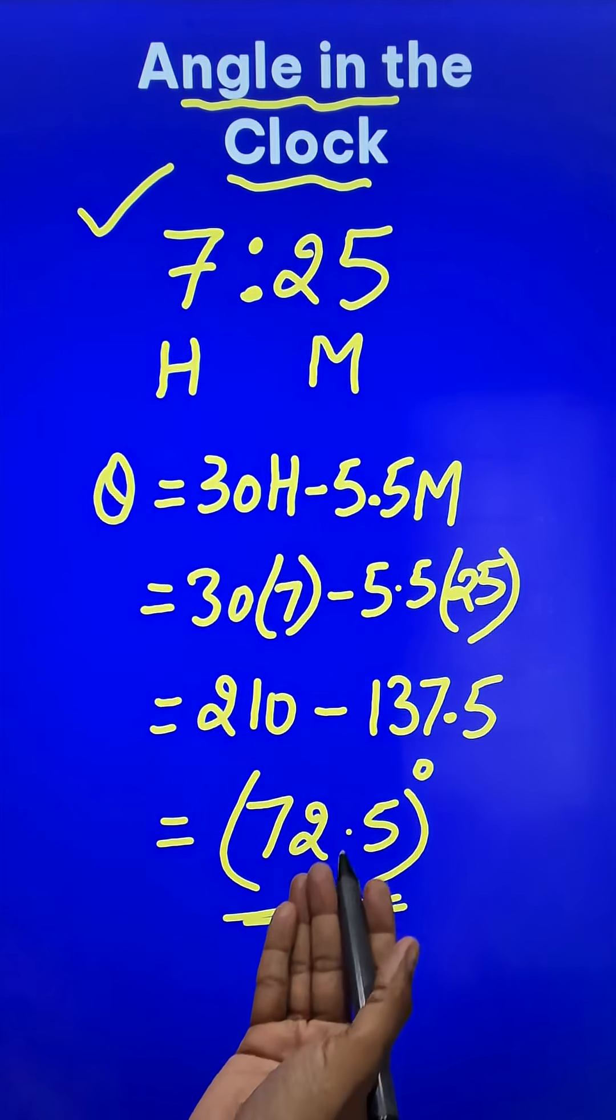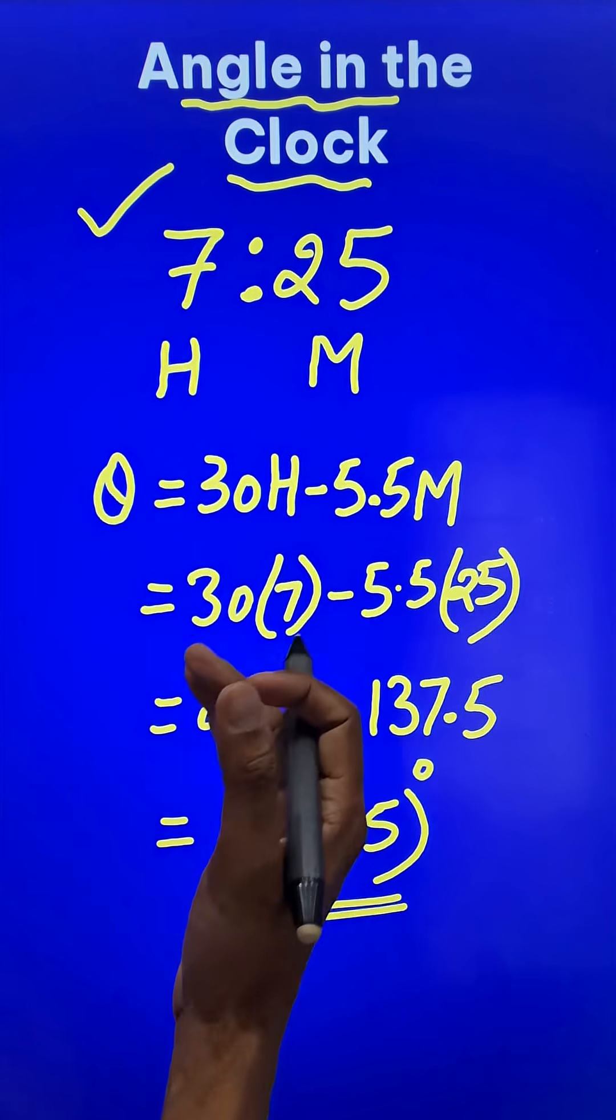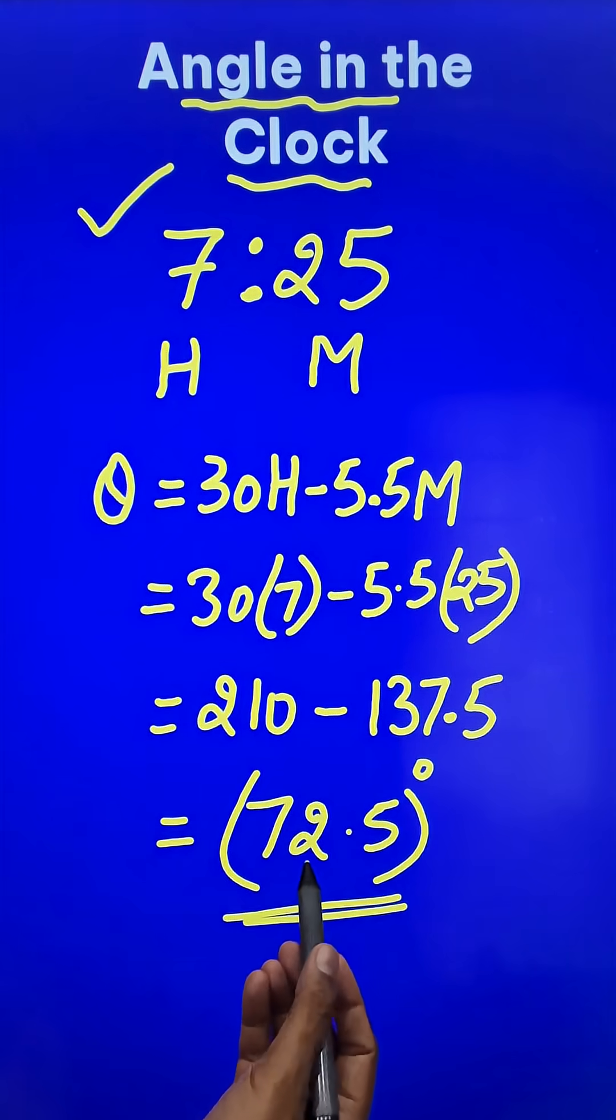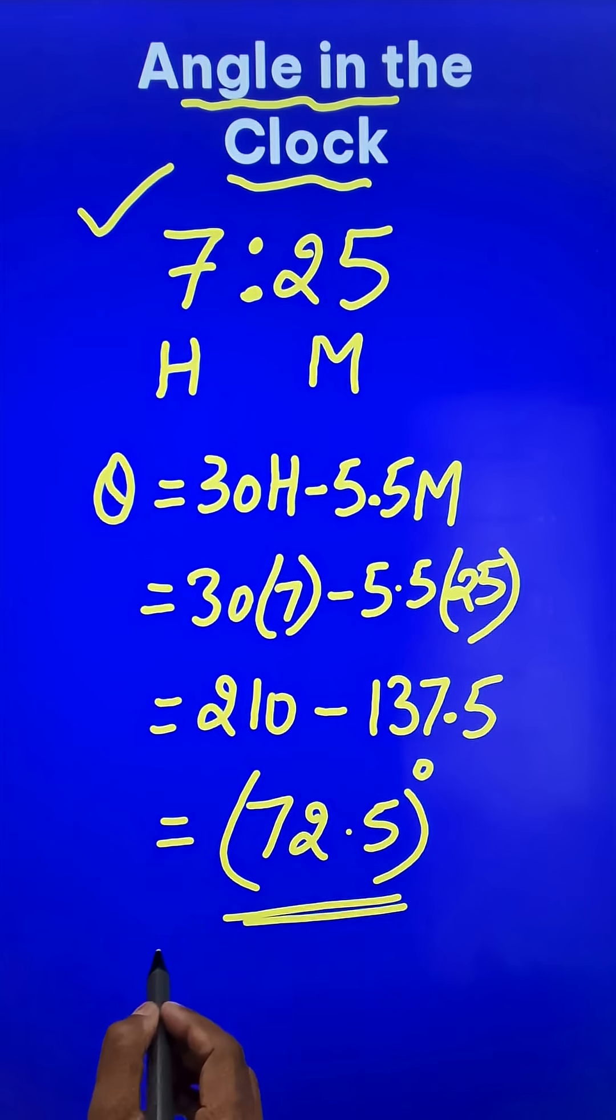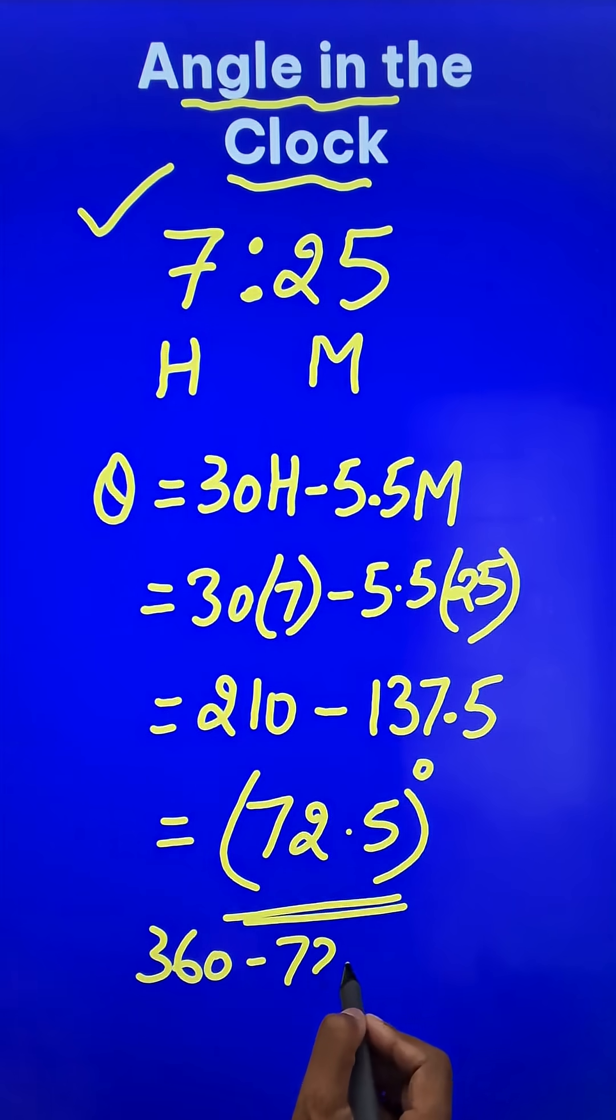You may get this as a negative value. Just ignore the negative sign and you will get the answer. If you want the larger angle, just subtract it from 360 degrees and you will find the larger angle between the minute hand and the hour hand of the clock.